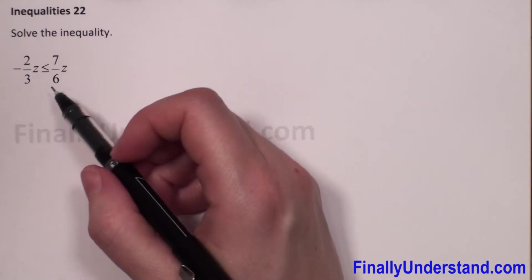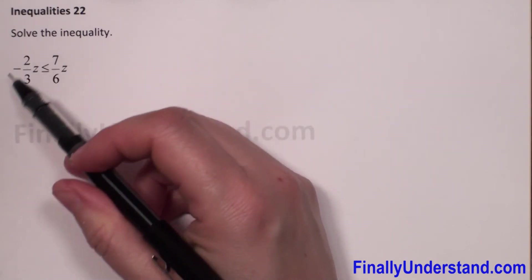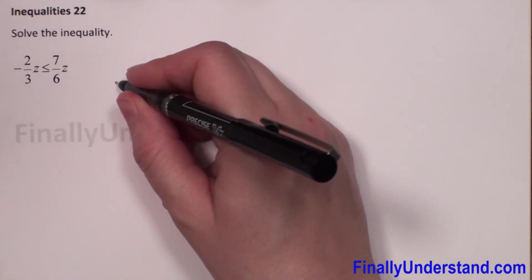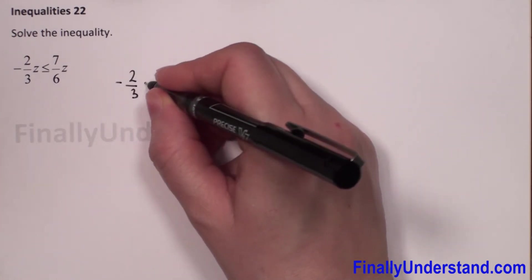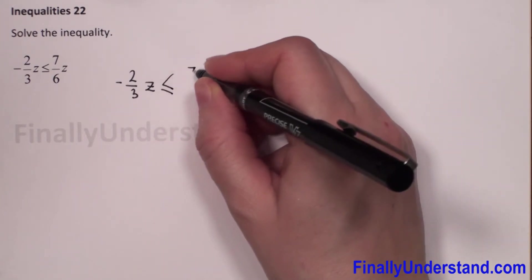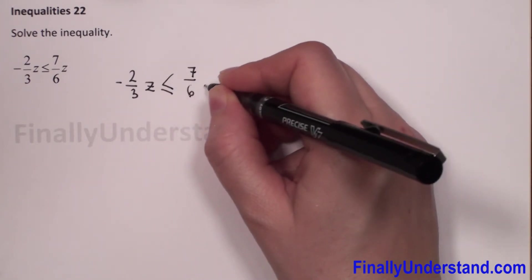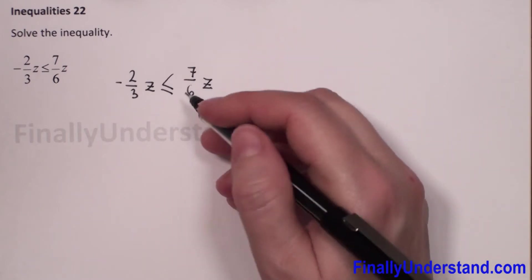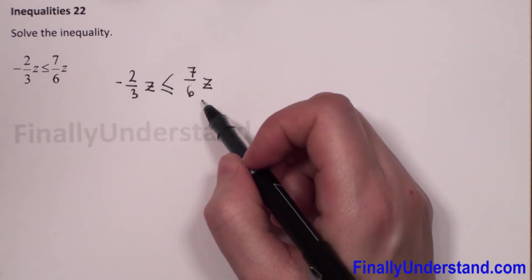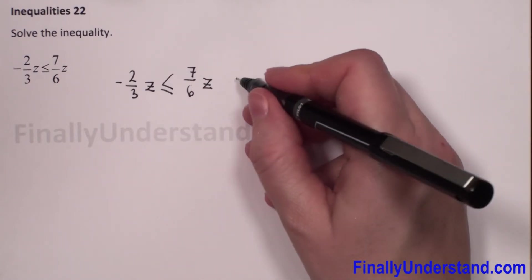We have the next example — we have to solve this inequality. It means we have to find all possible values of z for which this inequality is true. The example is: negative 2 over 3 times z is less than or equal to 7 over 6 times z. Because we have fractions on both sides, I have to multiply both sides by the common denominator, which will be 6.